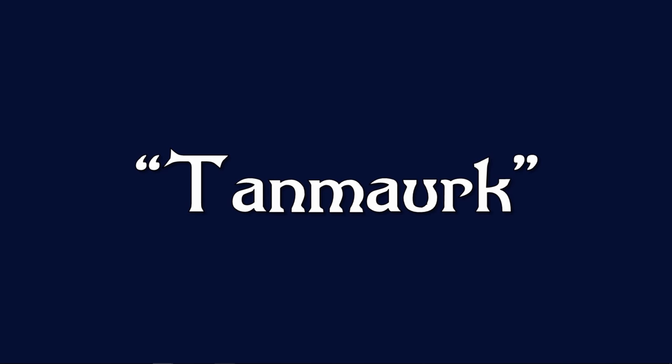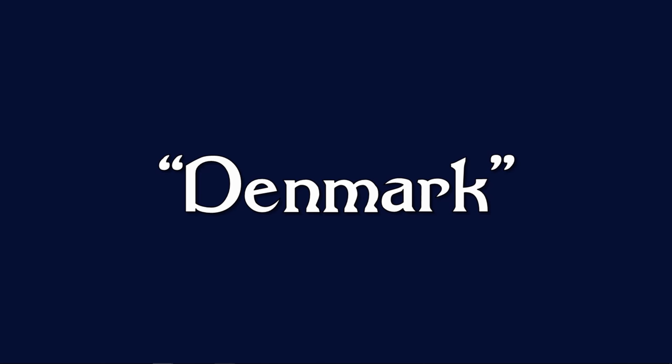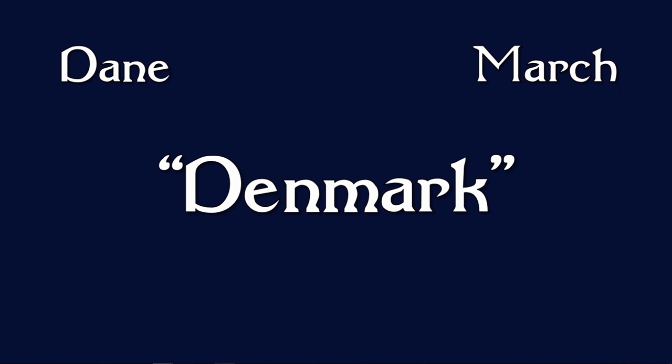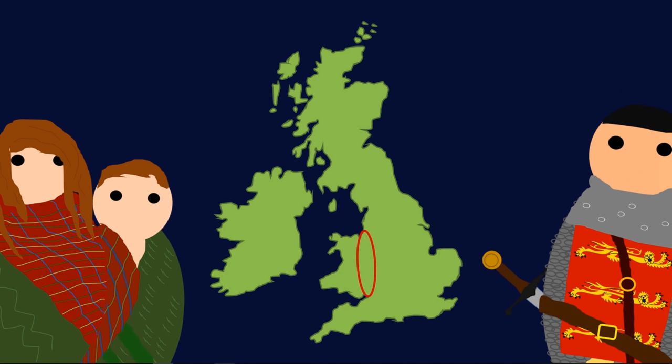Denmark is interesting because in the etymology of the word we get another sense of what it meant. It comes from 'Den' and 'Mark,' which really means 'Dane March.' The 'March' in this sense means a borderland — what marks or demarcates the border between two peoples. For example in the British Isles, we have the Welsh Marches, which was the border region between the Welsh Celtic speakers to the west and the Germanic English speakers to the east. So really what we mean by Denmark is the border of the Danes — where you cross over into the land of the Danes, where the Danes lived.